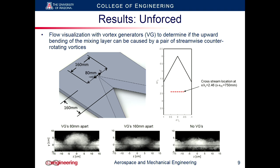To provide further support, we did an experiment placing vortex generators angled at different distances apart, creating stronger counter-rotating vorticity components. Flow visualization images — for example with vortex generators 80 mm apart and 160 mm apart — show this upward distortion of the mixing layer. Changing the distance between them gives a feel for the placement of the vortices on the splitter plate, and comparison with no vortex generators shows similarities, confirming it is very likely caused by a pair of streamwise counter-rotating vortices.